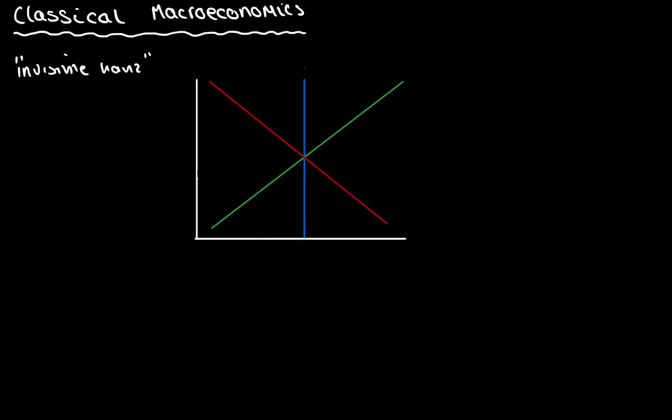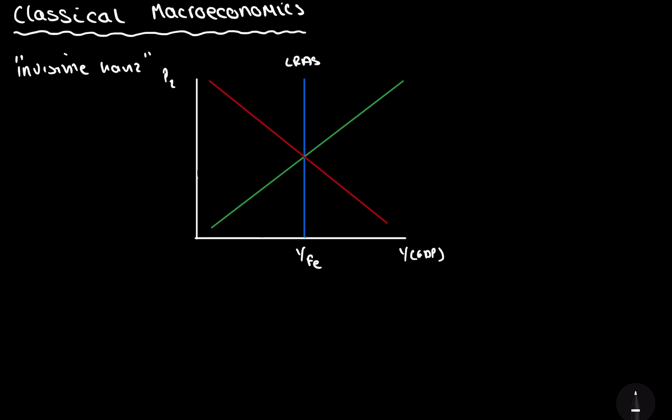So no government intervention. If we look at this ASAD diagram, we can start by labelling the axes. The x-axis is Y, which is GDP. The y-axis is price level, essentially inflation. And we've got three different curves on here. Let's look at each curve in turn. The first one, the blue one, is what we call the long-run aggregate supply curve. The reason it's vertical is because the classical economists' thinking is that in the long run, they are always at the full employment output. That's why we'll label this YFE. This is always the full employment output.